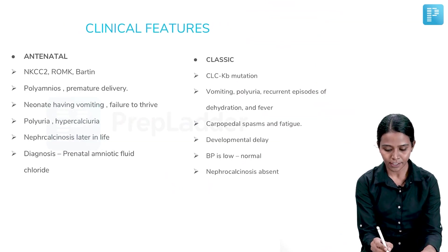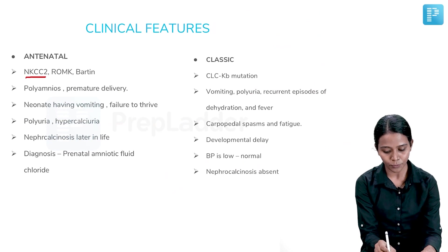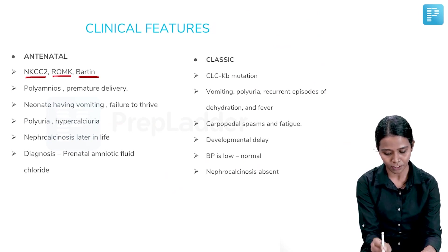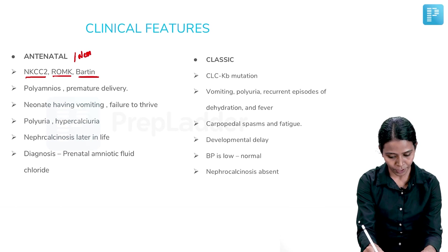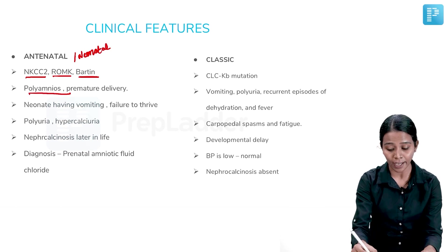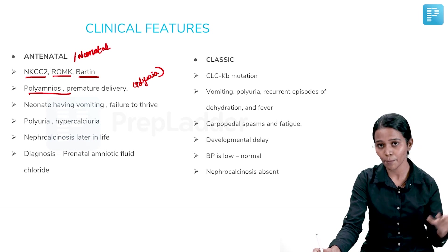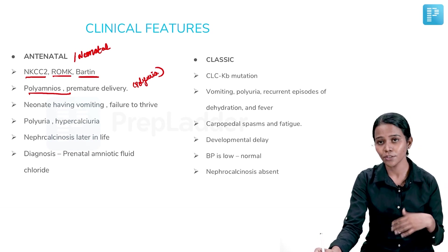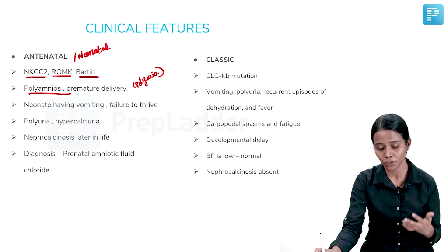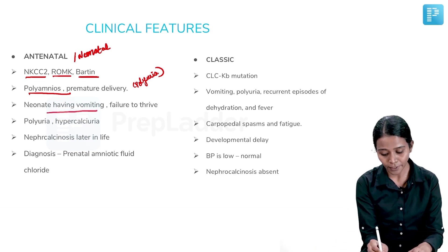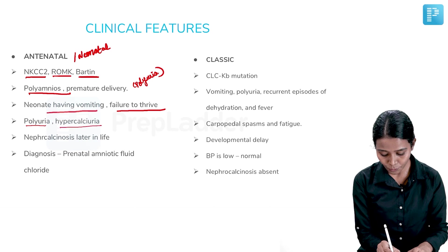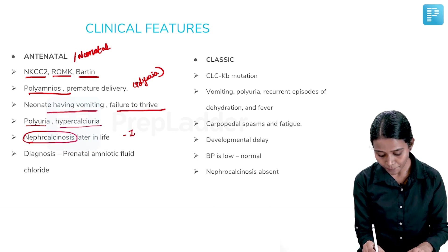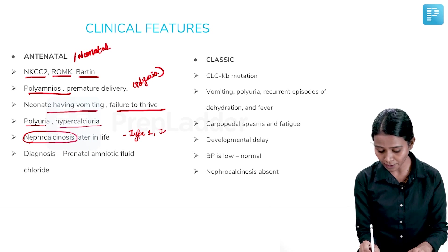Clinical features of antenatal Bartter (due to NKCC2, ROMK, or Barttin mutations) include polyhydramnios, because there is polyuria with loss of sodium and water into the urine, which can precipitate premature delivery. After birth, neonates have vomiting, failure to thrive, polyuria, hypercalciuria, and nephrocalcinosis — the latter two occurring only in types 1 and 2, not in the Barttin type.